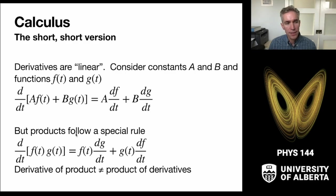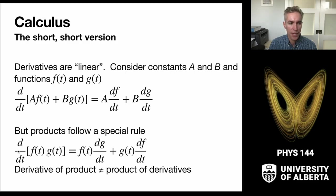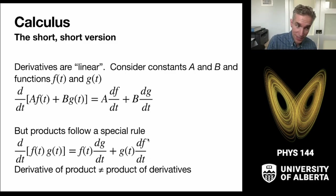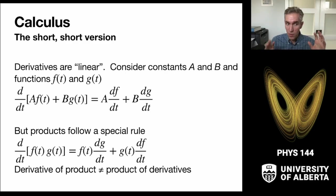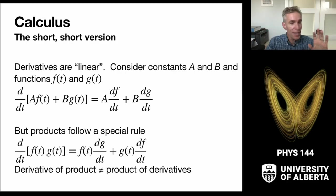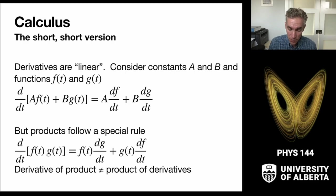Products of functions follow a special rule. If I take the time derivative of a product of two functions, I write down the first function times the derivative of the second, then add the second function times the derivative of the first. It's important not to just take the derivative of both and multiply them — you need both separate terms. This is called the product rule. We'll illustrate all of these as we go.